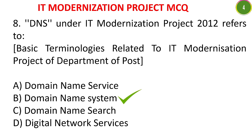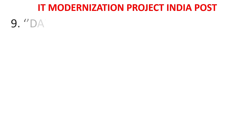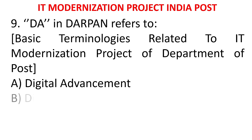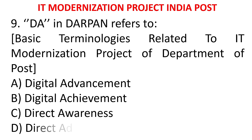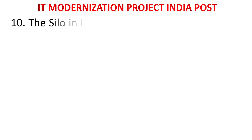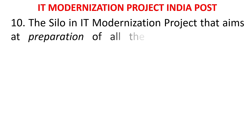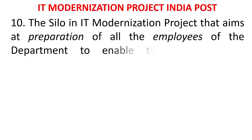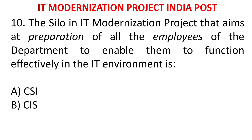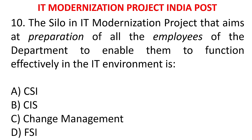MCQ 9: D-A in DARPAN refers to - A) Digital Advancement, B) Digital Achievement, C) Direct Awareness, D) Direct Advancement. The answer is Digital Advancement. MCQ 10: The silo in IT modernization project that aims at preparation of all employees of the department to enable them to function effectively in the IT environment is - CSI, CIS, change management, or FSI. The answer is change management.